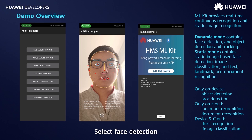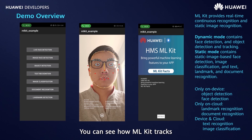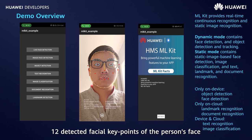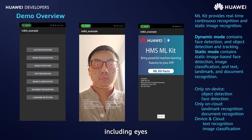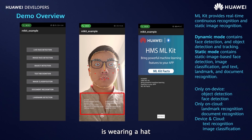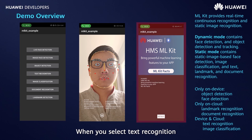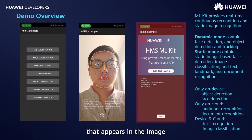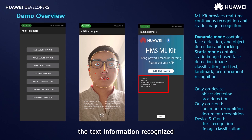When you select face detection, a detection UI appears. You can see how ML Kit tracks 12 detected facial key points of the person's face, including eyes, nose tip, and ears, and provides facial analysis information such as the probability that the subject has their eyes open, is wearing a hat, and their age. When you select text recognition, you can see how the feature extracts all the text that appears in the image and displays it below the image.